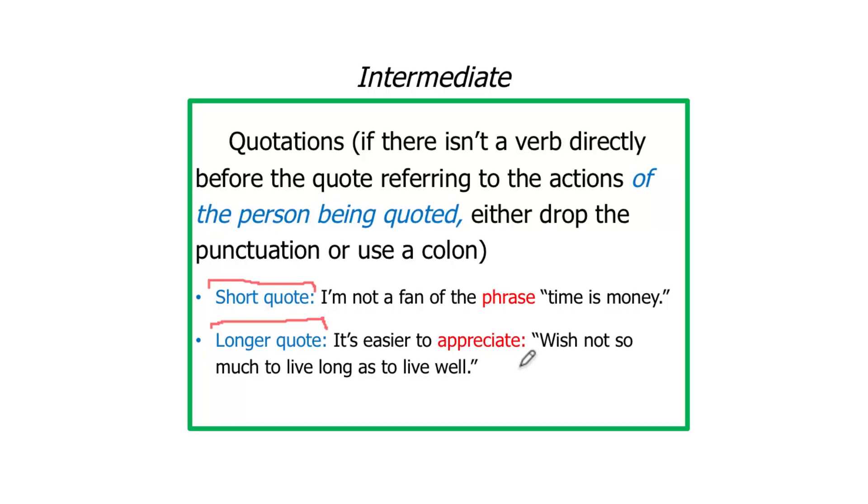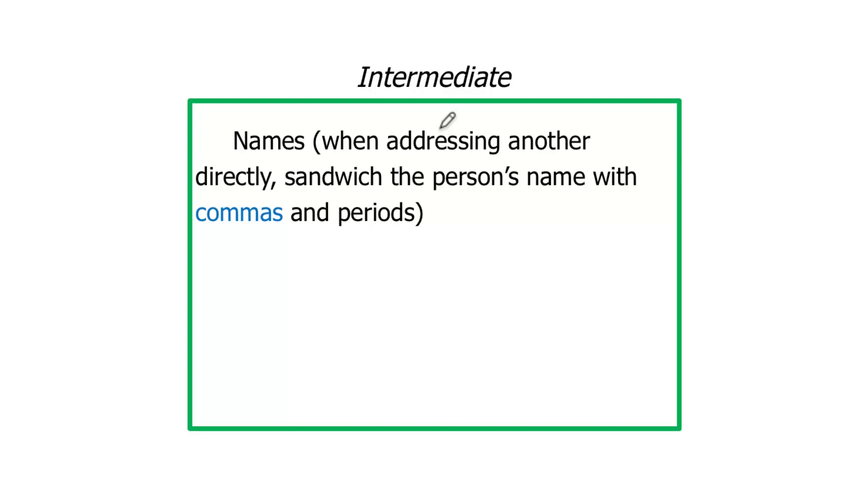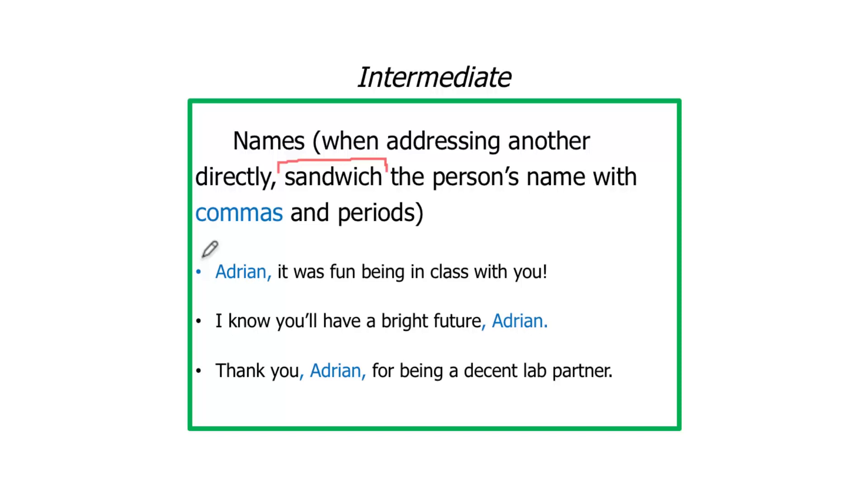Let's talk about names. In the case of names, when we're addressing another person directly, maybe in a letter, an email, or just talking to them, what we do is we sandwich the person's name with some combination of commas and periods, or it could be like exclamation marks or question marks. I'm showing you examples of Adrian's yearbook. One classmate wrote, 'Adrian, it was fun being in class with you.' And we get a comma right after Adrian. It's not sandwiched because it's the beginning of the sentence, and we don't put punctuation at the beginning of sentences.